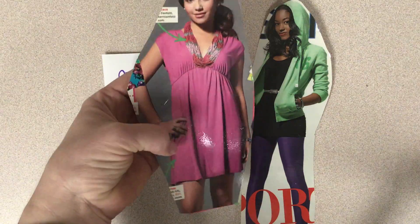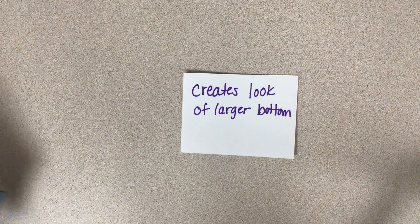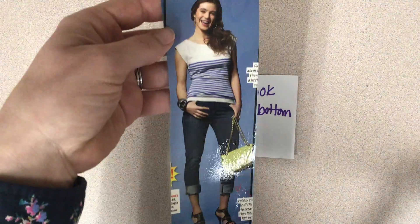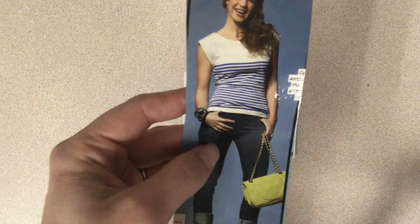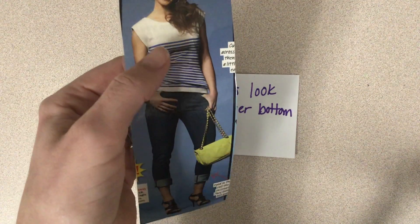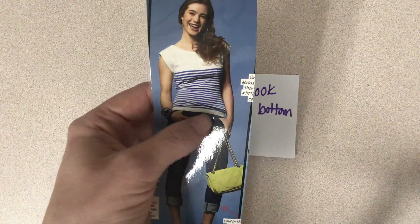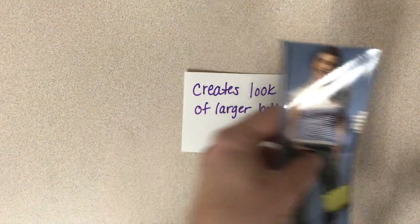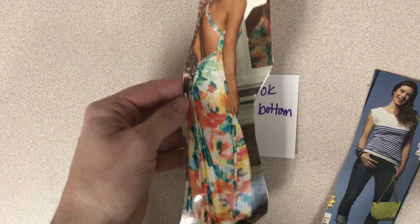Another example would be creating a larger bottom look. This is done in two ways: bulkier jeans on the bottom, and then these horizontal lines that kind of draw your eye down to her waist, making it look wider. So horizontal lines make you look wider.